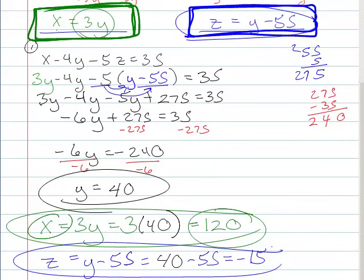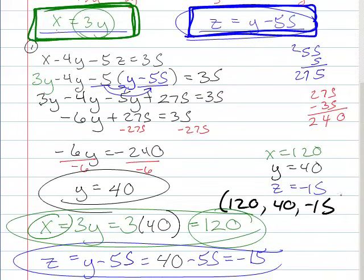Just like that. So since I have x equals 120, I have y equals 40, and I have z equals negative 15. So now I can write my ordered triple, 120, 40, and negative 15. And we're all done.